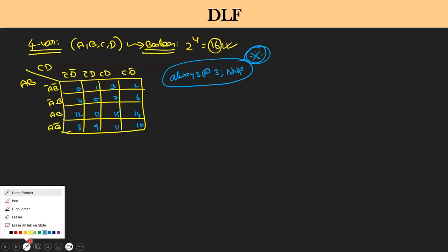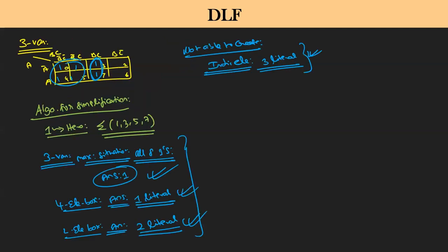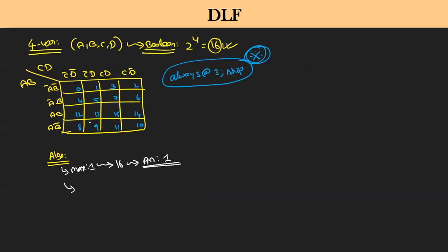So what are you going to expect now for the 4-variable map? The algorithm: how many ones do you need maximum? Maximum 16 ones possible. If all 16 are 1, then the answer is 1. The next possible grouping is 8-box. If you make an 8-element combination, then the answer will be 1 literal.